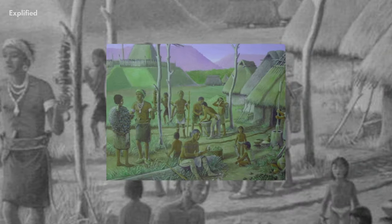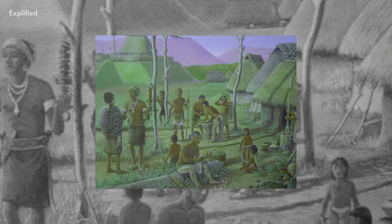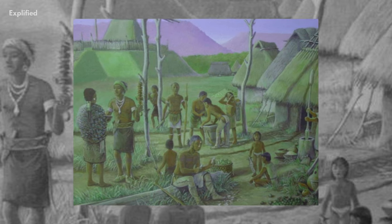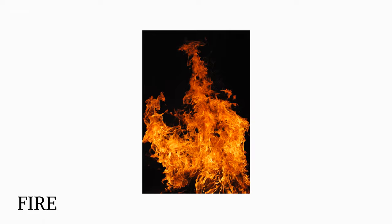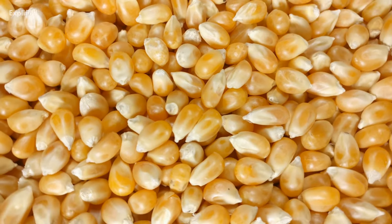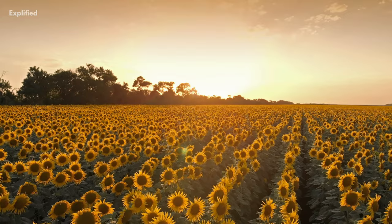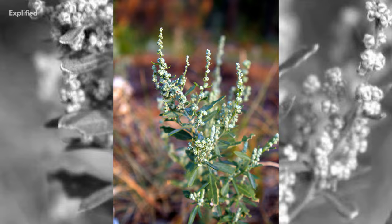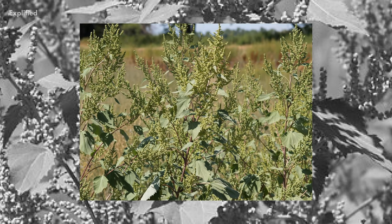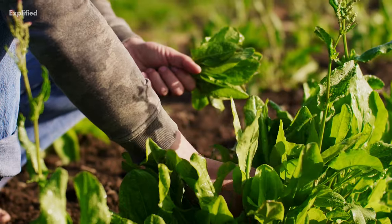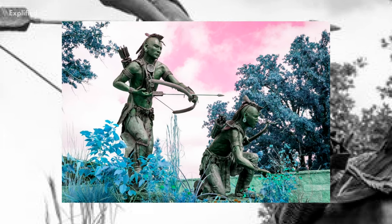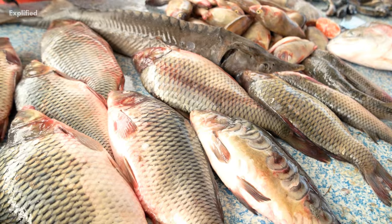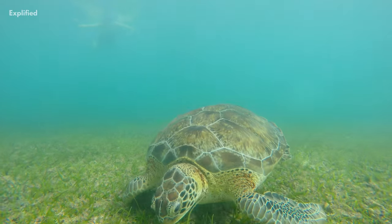Horticulturists were common among Mississippians. Many of their foods were grown in tiny gardens using rudimentary equipment like stone axes, digging sticks, and fire. Plants such as corn, beans, squash, sunflowers, goosefoot, smartweed, and others were grown. They also ate natural vegetation and animals, harvesting nuts and fruits and hunting small game like deer and turkeys.